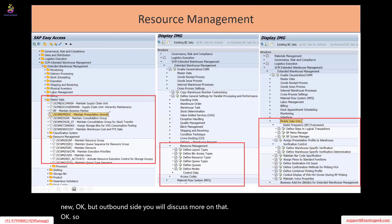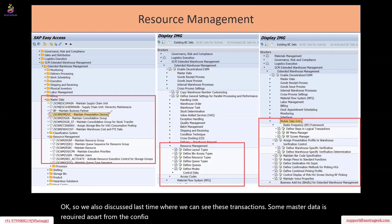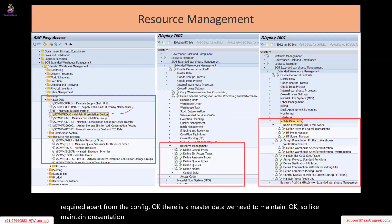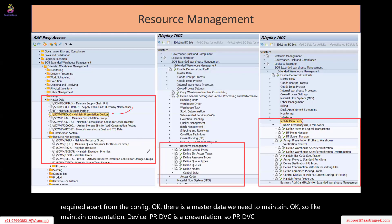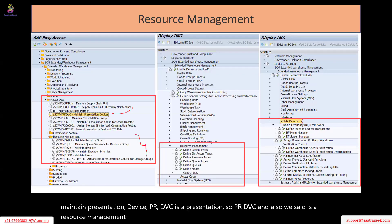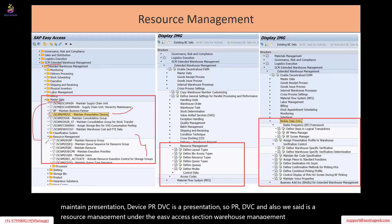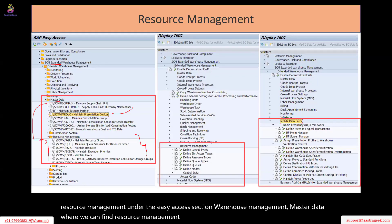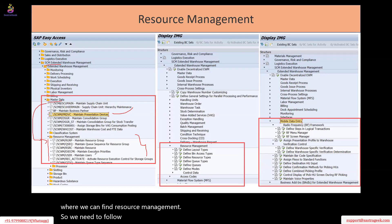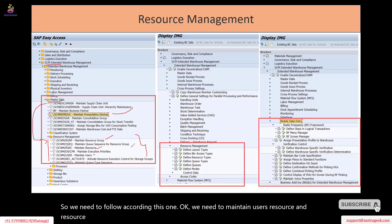We also discussed last time where we can see these transactions — some master data is required apart from the config. There is master data we need to maintain, like maintain presentation device (PR DVC is a presentation). Under the easy access section, various management master data, where we can find resource management. We need to maintain users, resource, resource group, and queues — that's where the queue data is maintained.